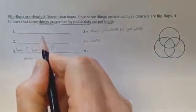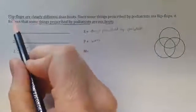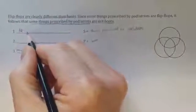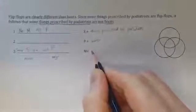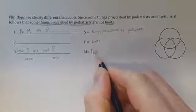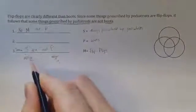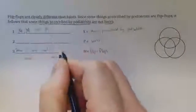Now if you think about what that's saying, it is in effect saying no flip-flops are boots. So I'm going to write the first premise as no M are P, because M is now my middle term, flip-flops. That is the term that does not appear in the conclusion, but does appear in both of the premises.